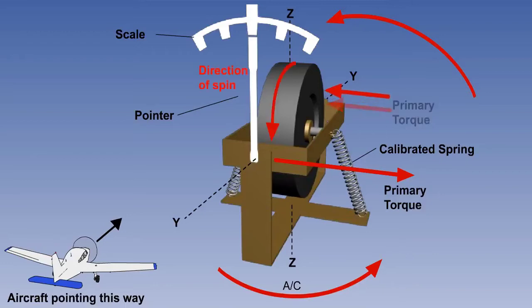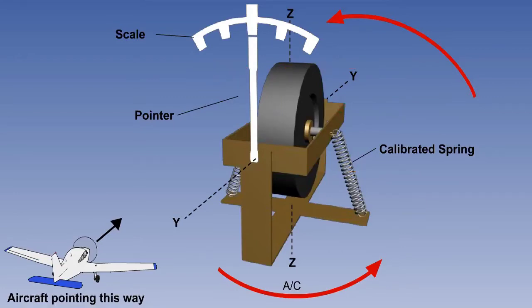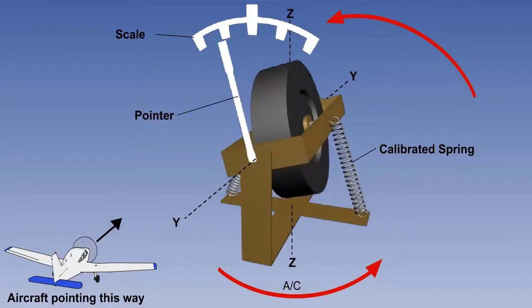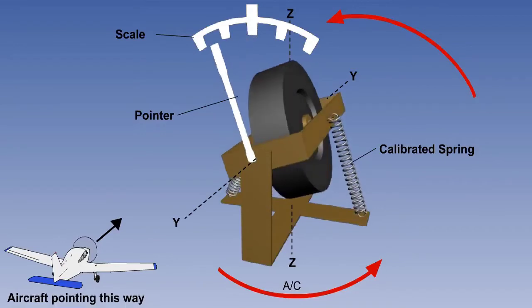This torque will be precessed 90 degrees in the direction of rotation, which, in this example, is with the top of the rotor coming down towards the pilot. The resultant precession will cause the gyro to tilt around the Y-Y axis. As the rotor tilts, it causes a spring between the gimbal and the frame to be extended.